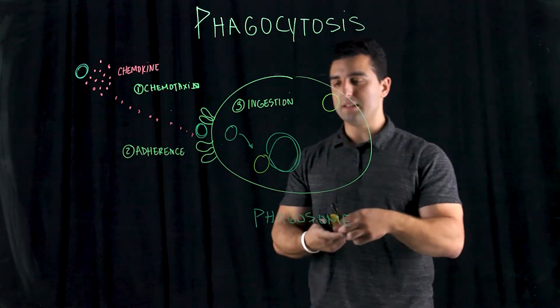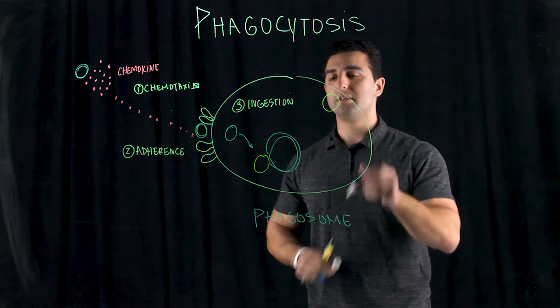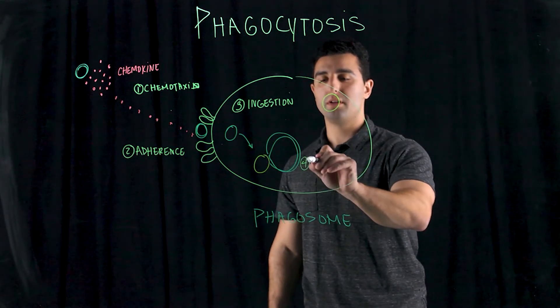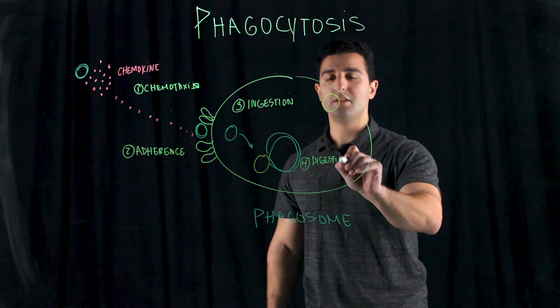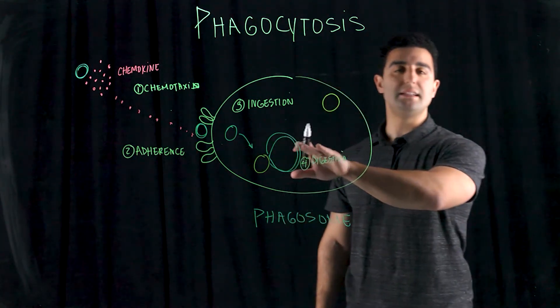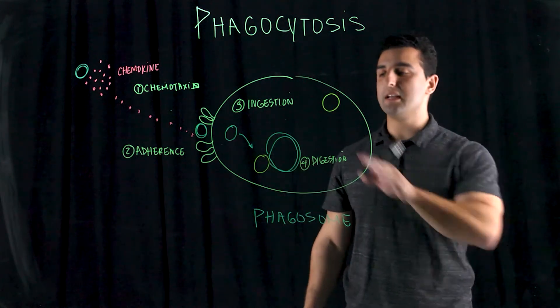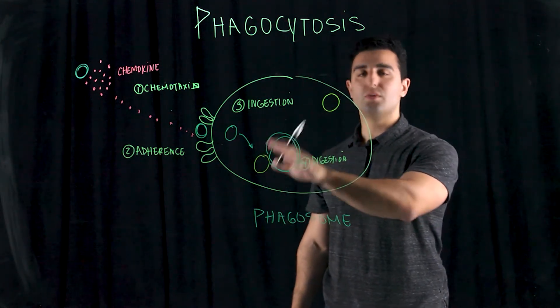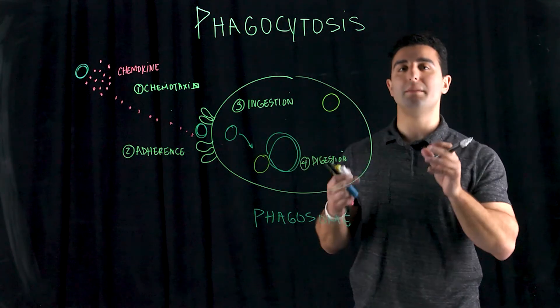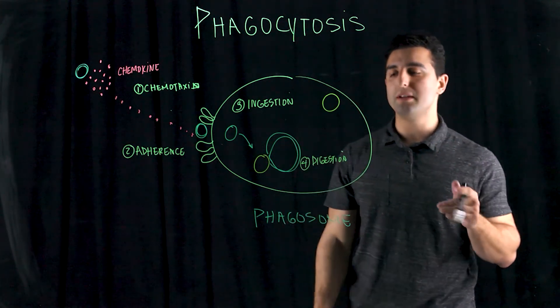So now number four, you have this digestion taking place. So all of these lysosomes have these hydrolytic enzymes that come in, engulf this pathogen, secrete all of these hydrolytic enzymes to break down the pathogen into less harmful, less infectious ways.